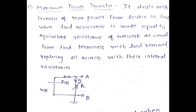Voltage sources and current sources will be represented by their internal resistances — that is, the voltage source is short-circuited and the current source is open-circuited. To summarize: maximum power can be transferred from the source to the load when the equivalent resistance from the load terminal equals the load resistance, with the voltage source shorted and the current source open-circuited.